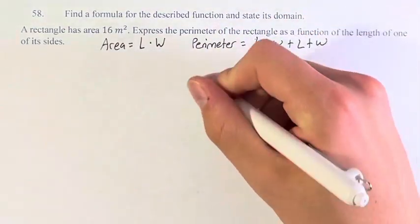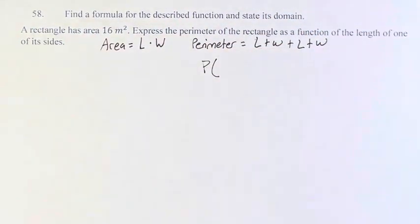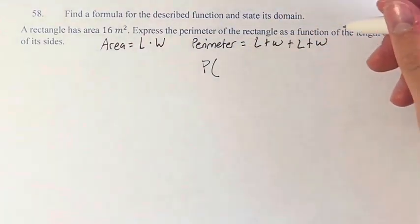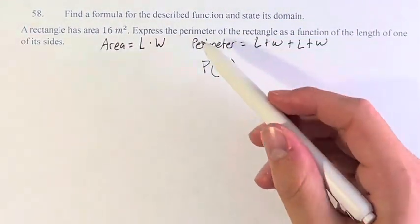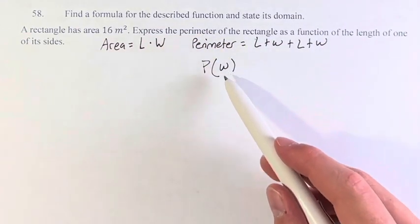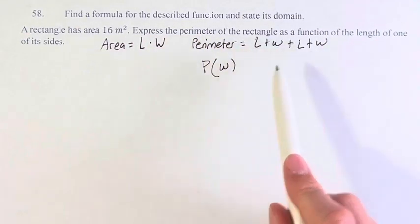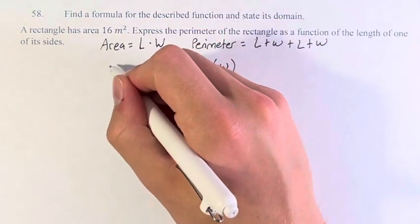And this is what we're trying to get with our function. We can call this P of one of the sides. Let's choose W, the width. We want to express the perimeter as a function of the width and only the width. Right now, we have it also as a function of the length. However, we know that the area is 16.